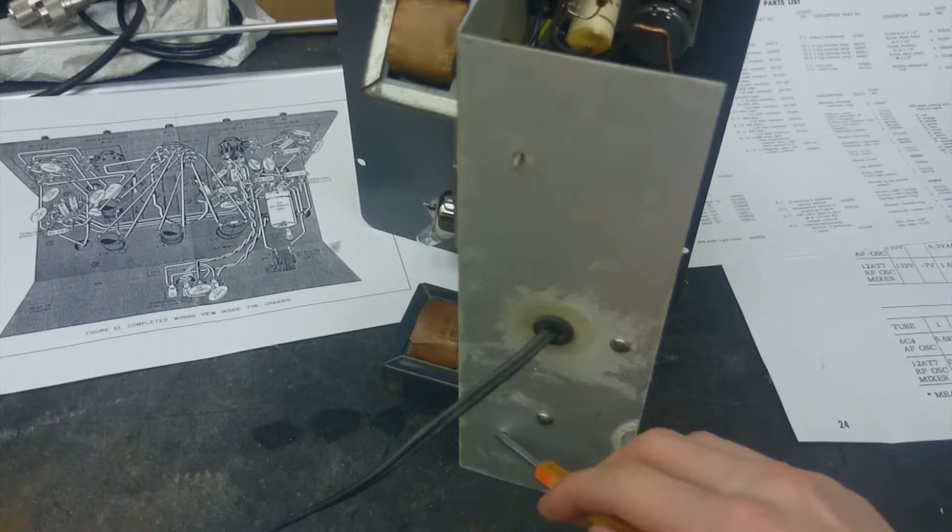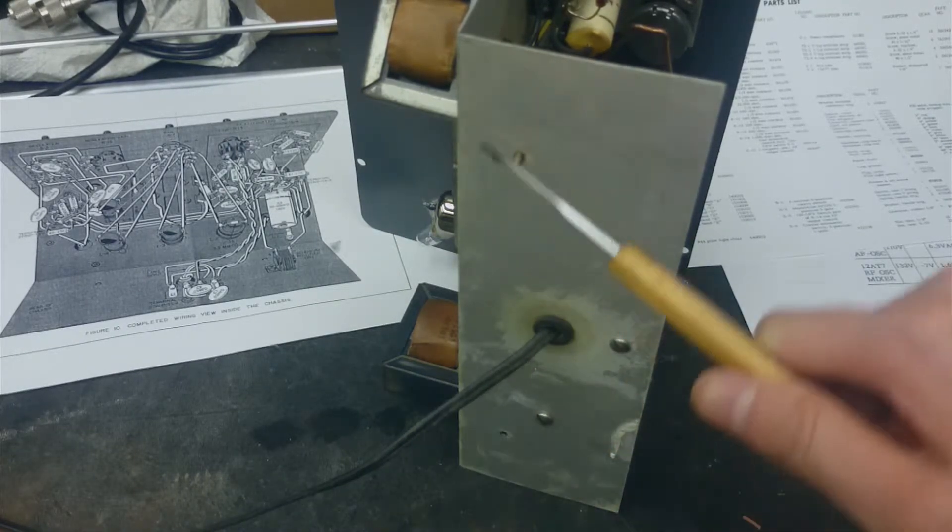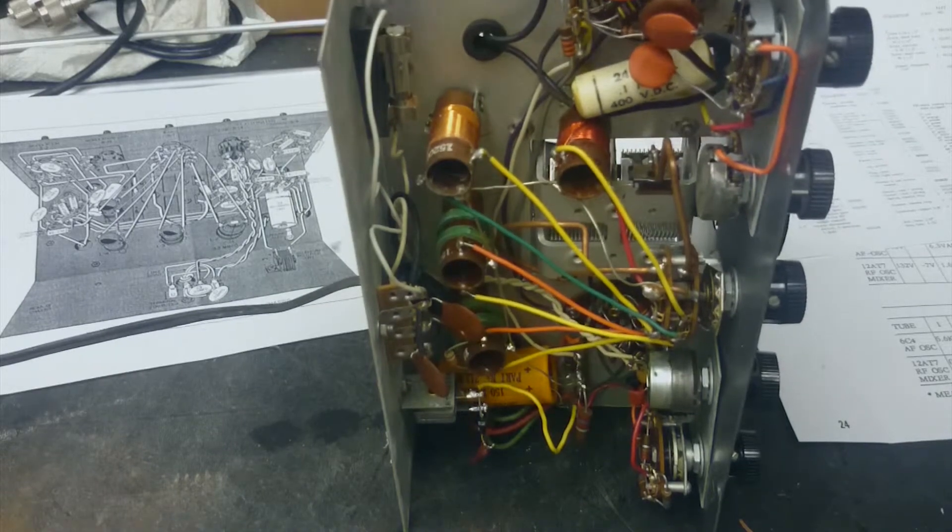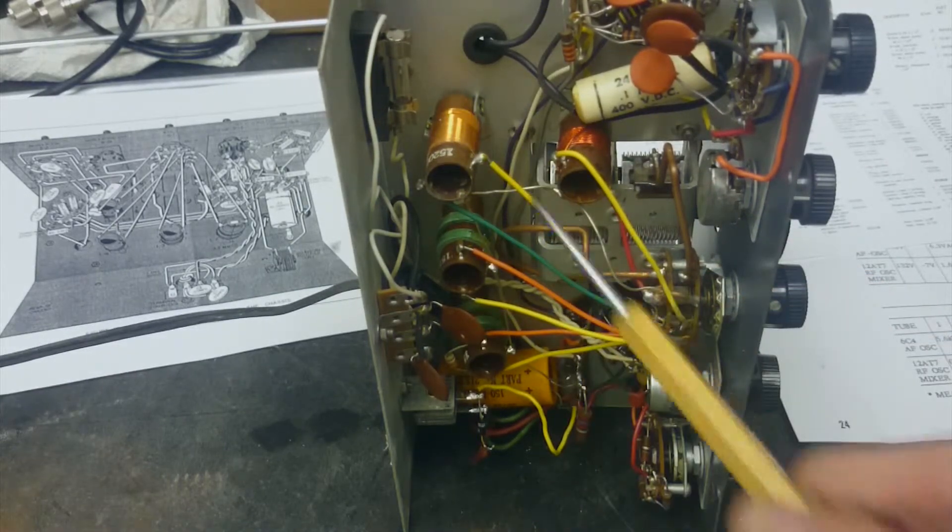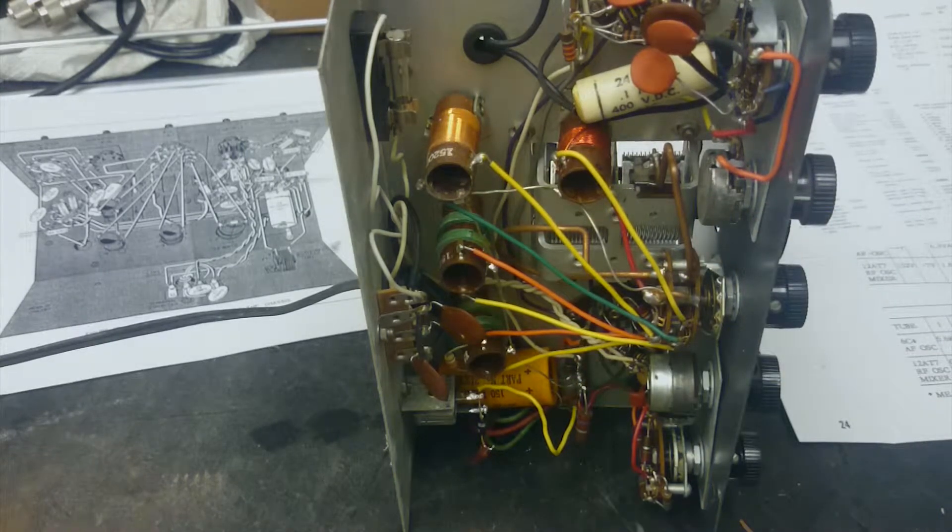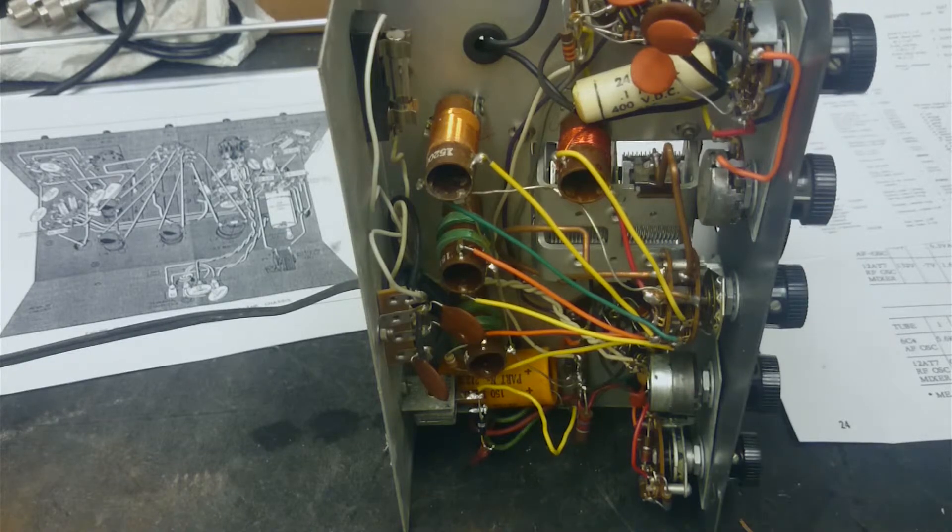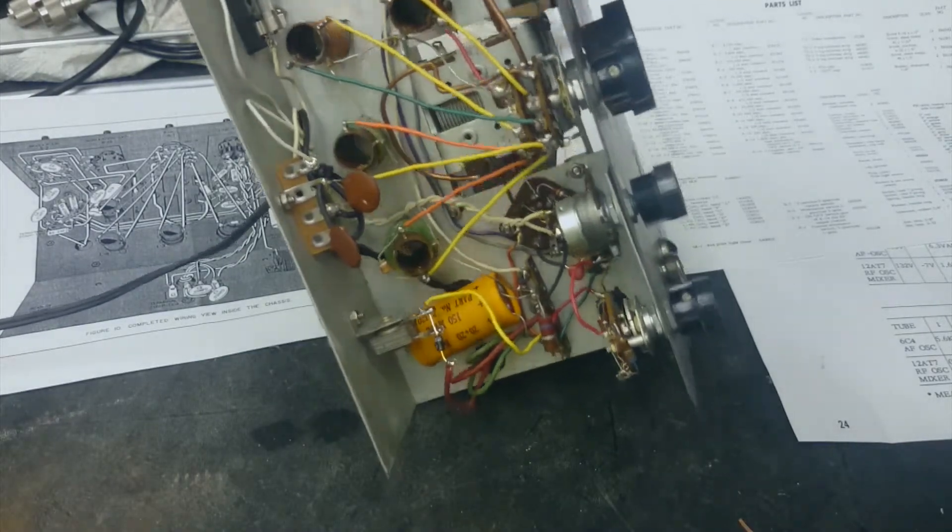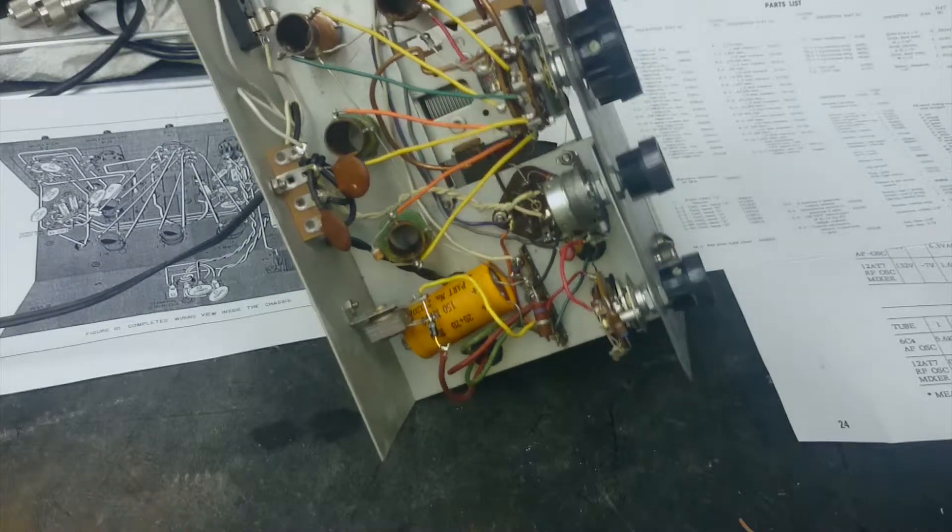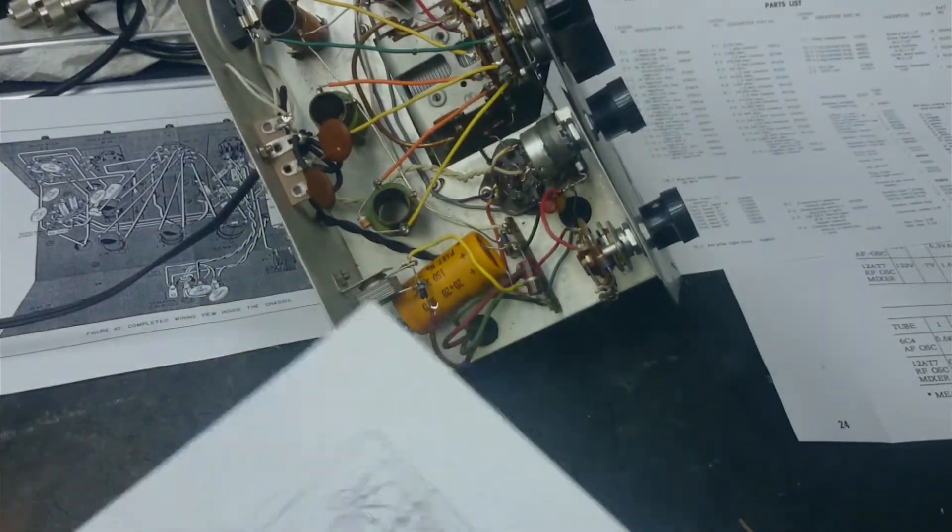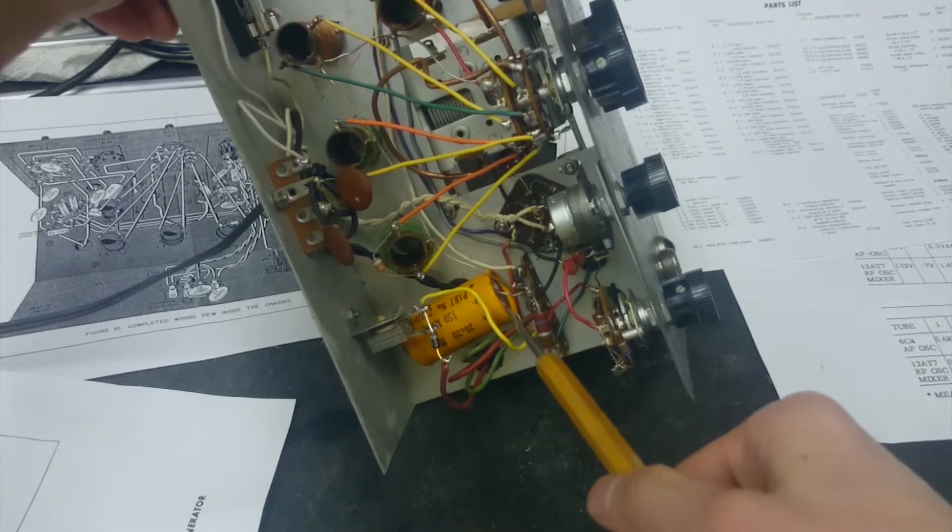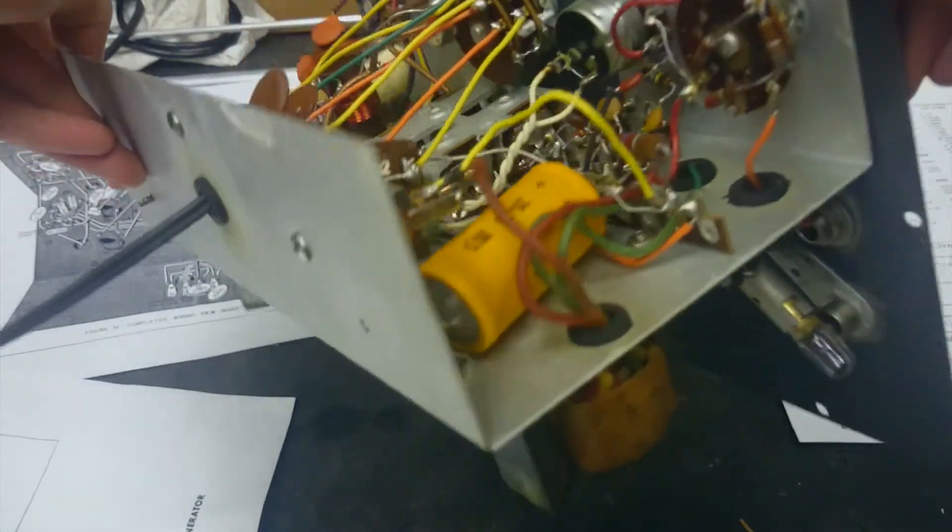We have a big orange capacitor here that's probably not very good. It's 150 MVDC, so 150 volts, and it's 20 plus 20 microfarad. There's two capacitors in here. There are two terminals on this side and the other side of the capacitor is connected to ground.